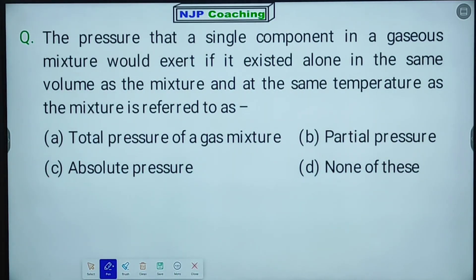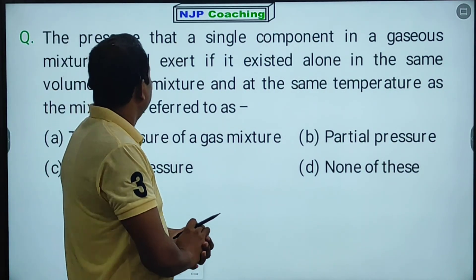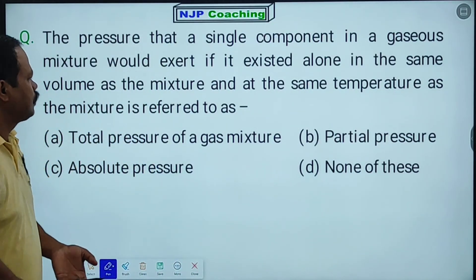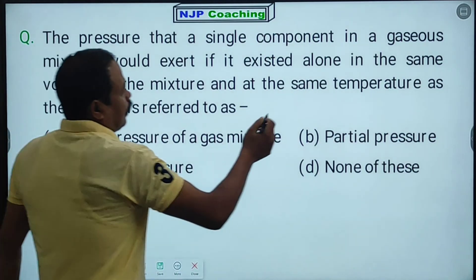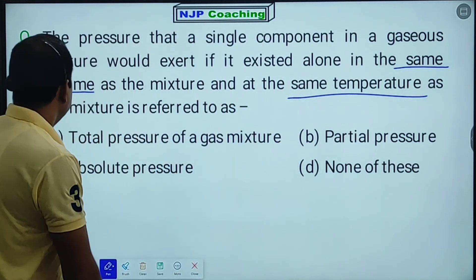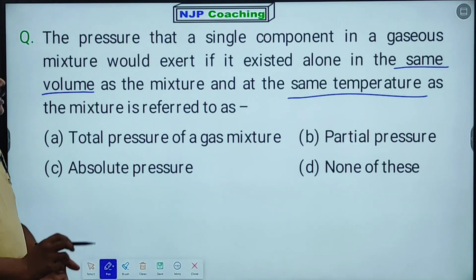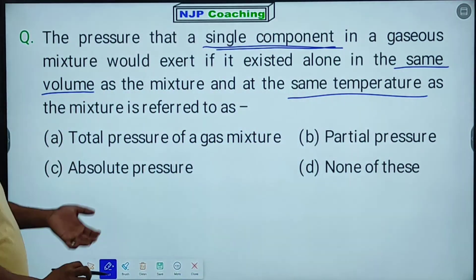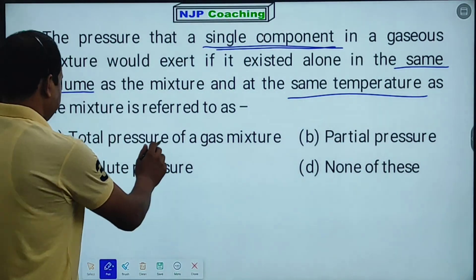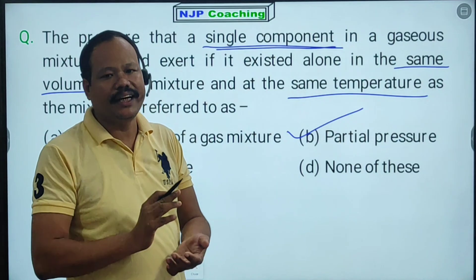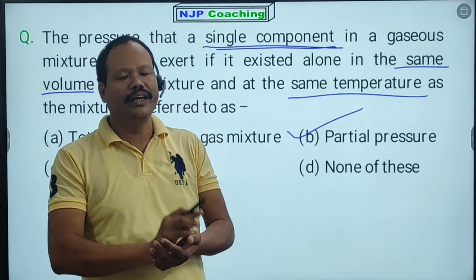The pressure that a single component in a gaseous mixture would exert if it existed alone in the same volume as the mixture and at the same temperature as the mixture is referred to as partial pressure. Total pressure is not the answer, nor is absolute pressure. The correct answer is partial pressure exerted by a single component in a gaseous mixture.